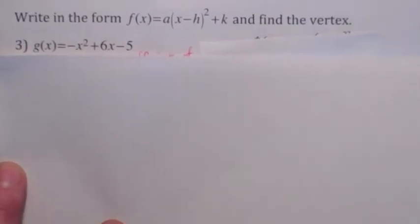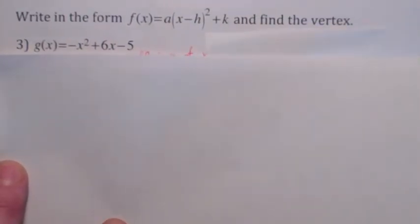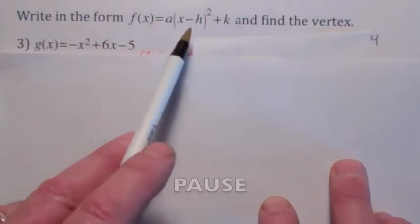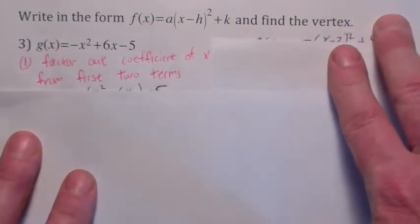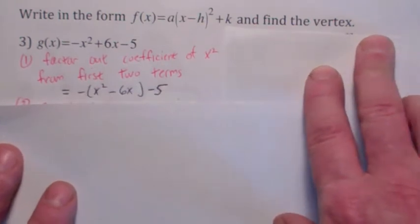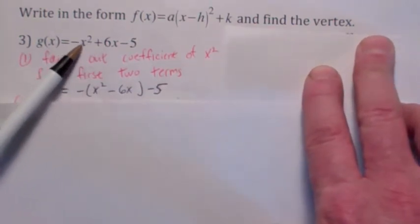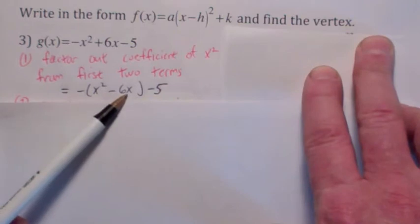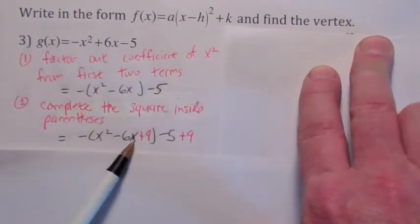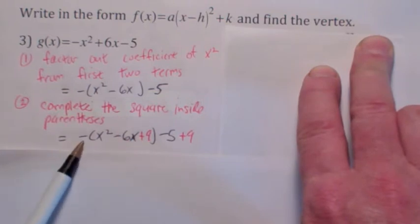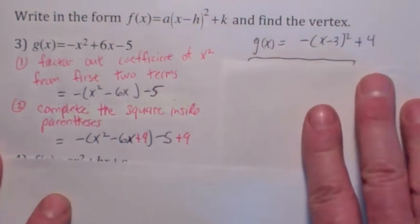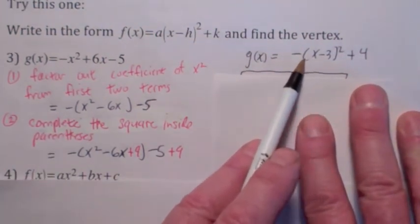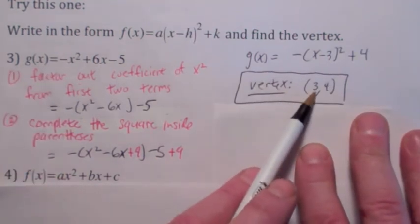We're going to focus on the vertex for now. See if you can take this quadratic function and write it in vertex form to find the vertex. The first step is to factor out the coefficient of x squared, which is negative 1. Then to complete the square inside the parentheses, you add 9. But since there's a minus sign out front, you really subtracted 9, so you have to add 9 on the outside. It turns into a perfect square, and the vertex is at (3, 4).